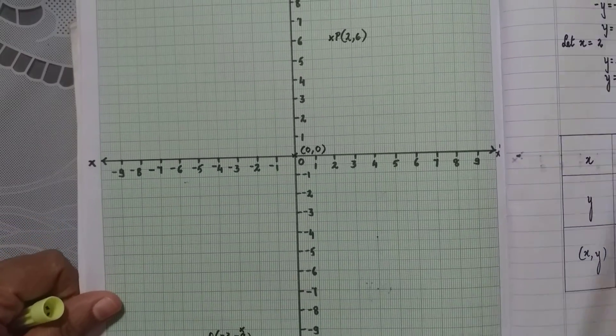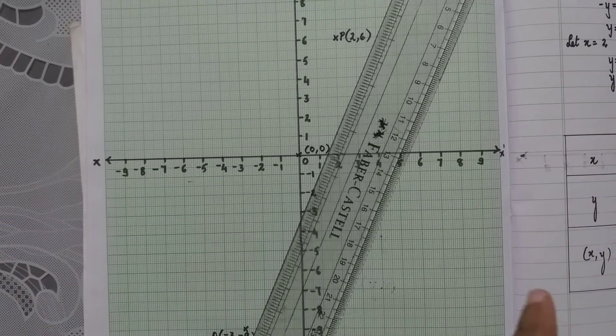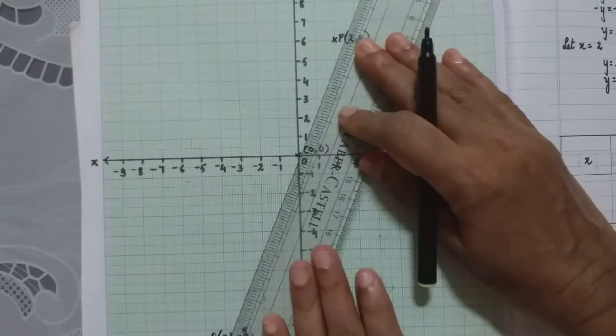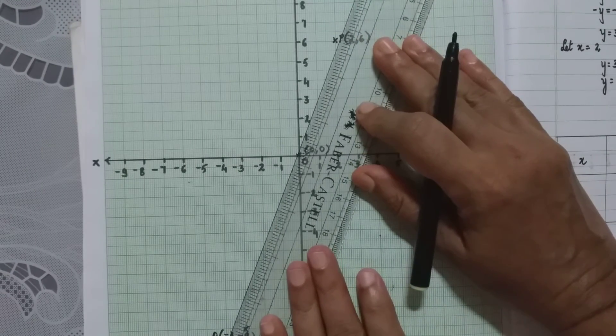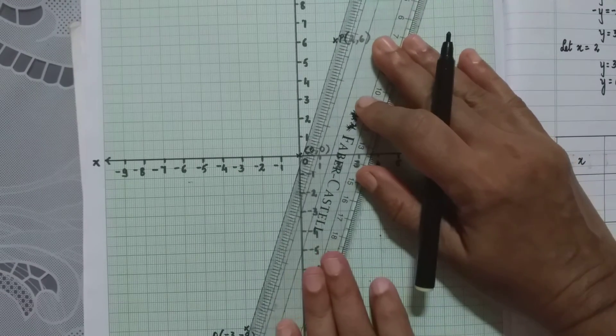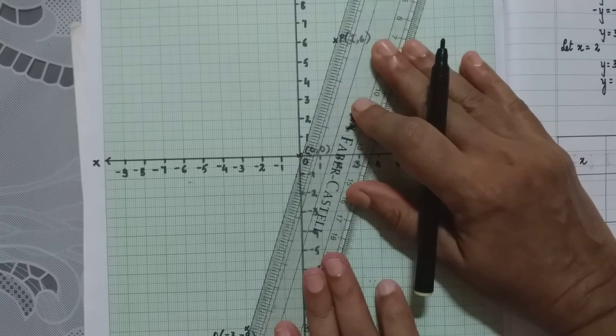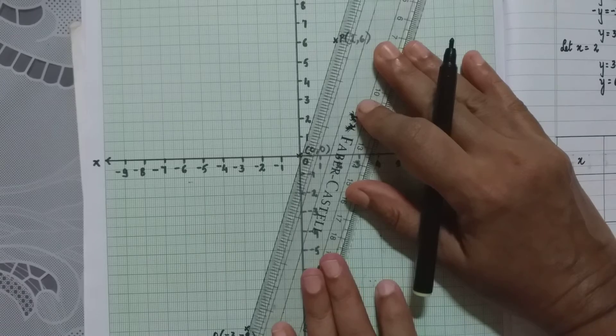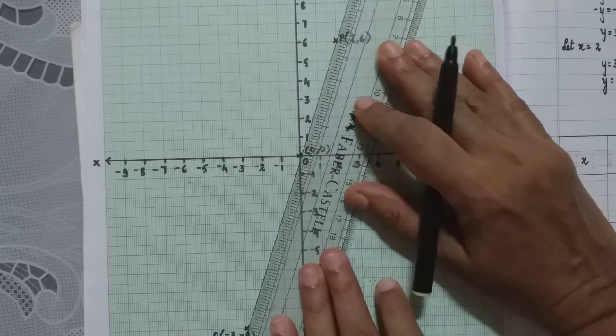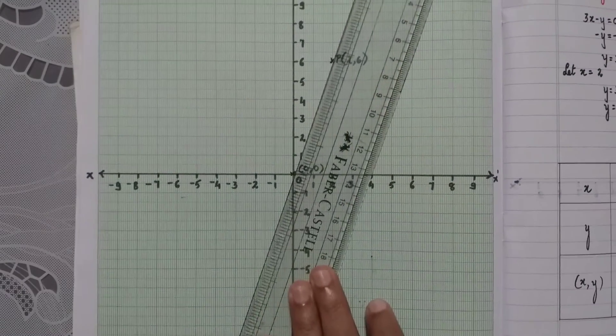Now what is the next step? To keep the scale against these points and draw a line passing through these three points.